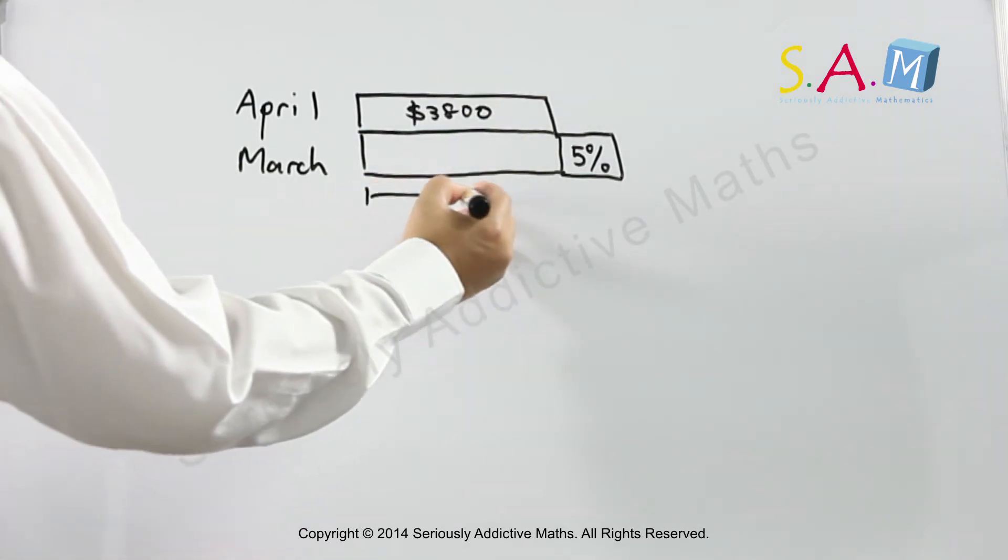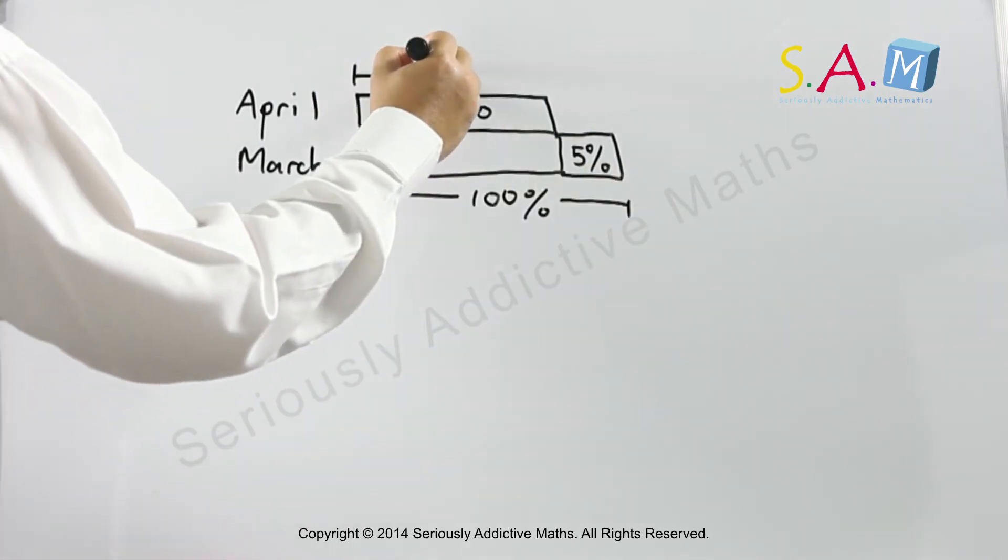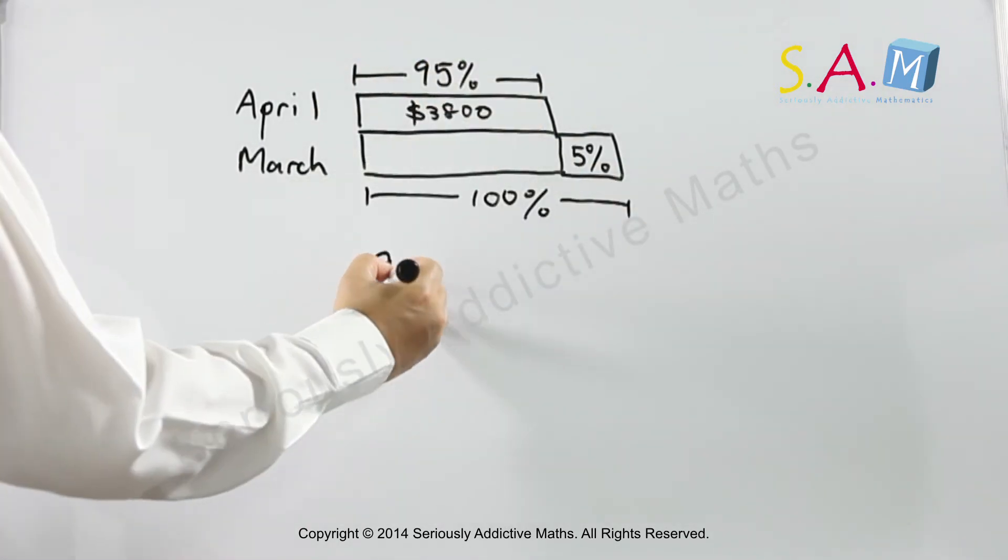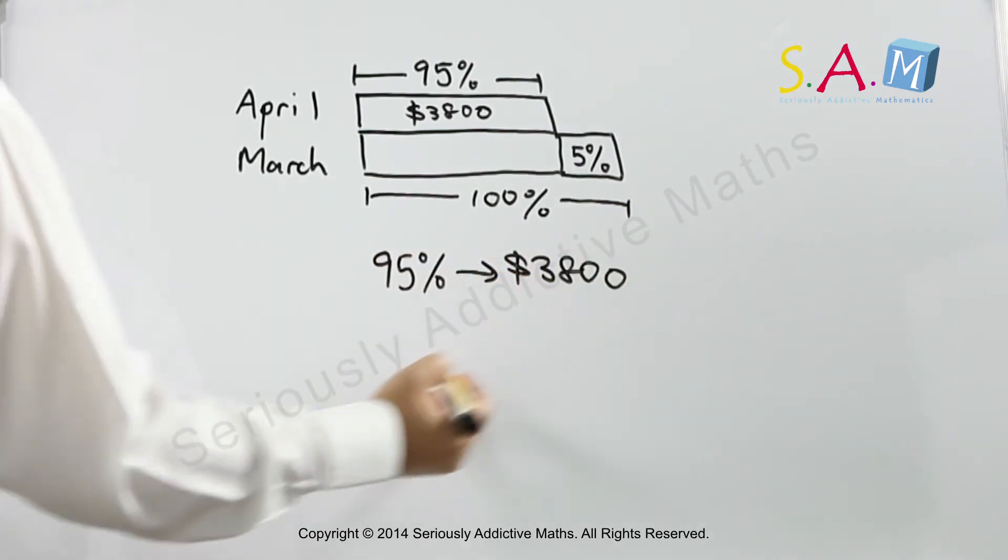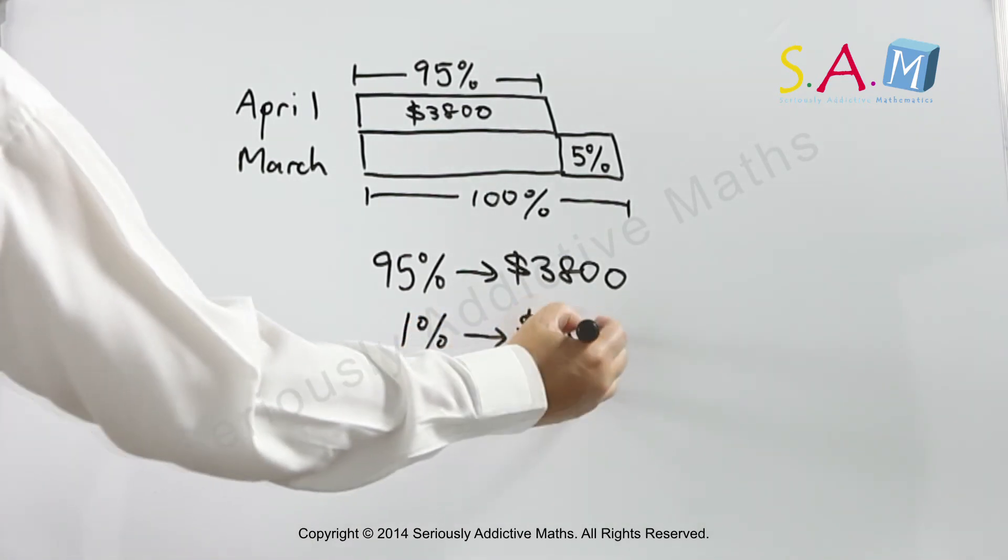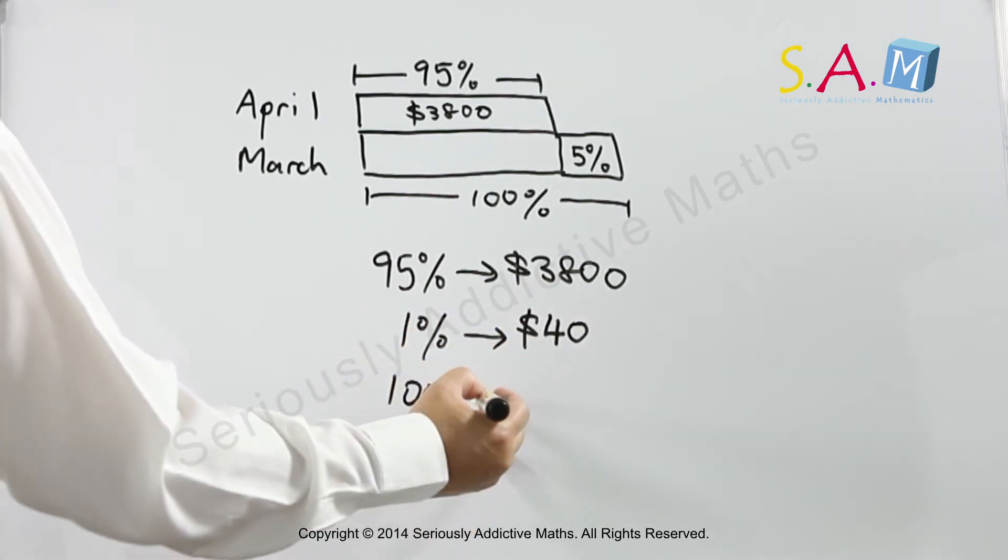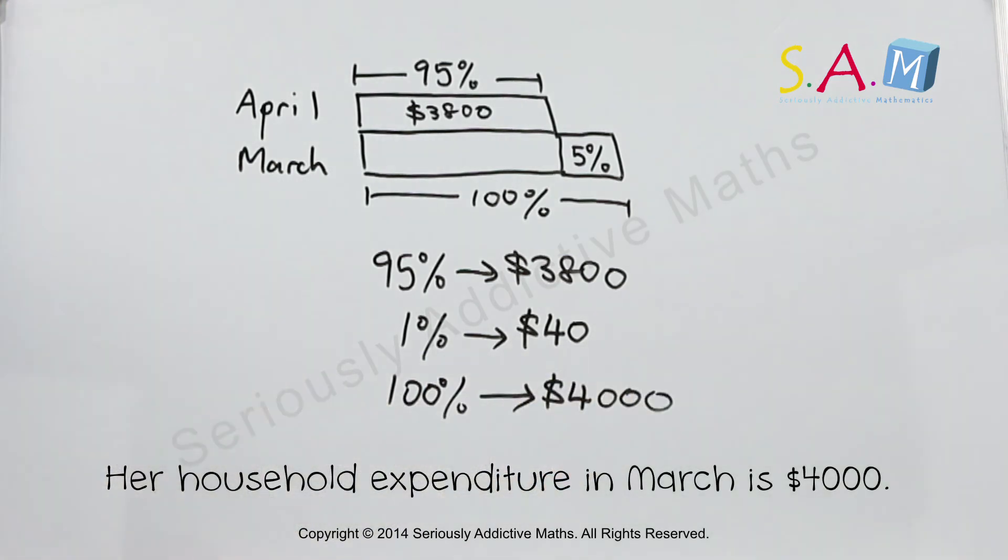So if March were 100%, April would be 95%. So 95% is $3,800, which means 1% must be $40. Therefore, 100% of the March expenditure would be $4,000.